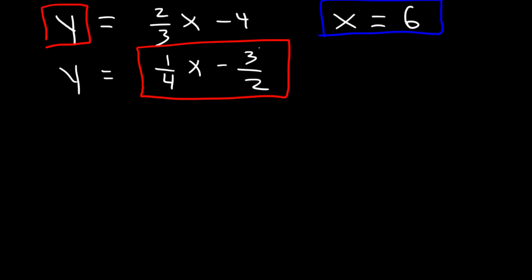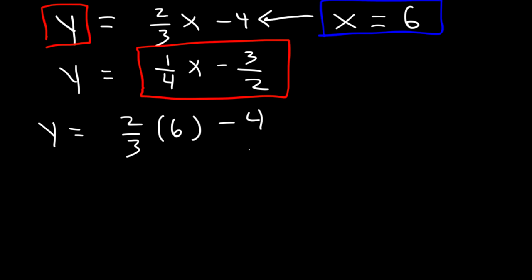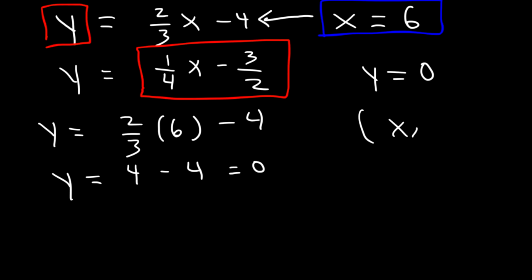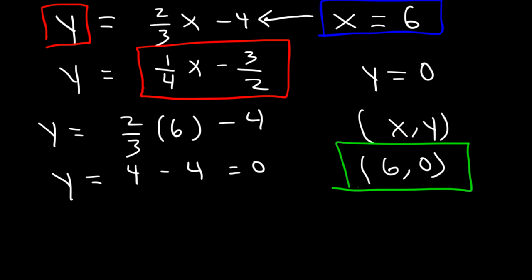Now let's plug x equals 6 into the first equation. So let's replace x with 6. What's 2 3rds of 6? 2 times 6 is 12, divided by 3 is 4. And 4 minus 4 is 0. So y is equal to 0. So in terms of x comma y as an ordered pair, it's going to be 6 comma 0. That is the solution for this example.